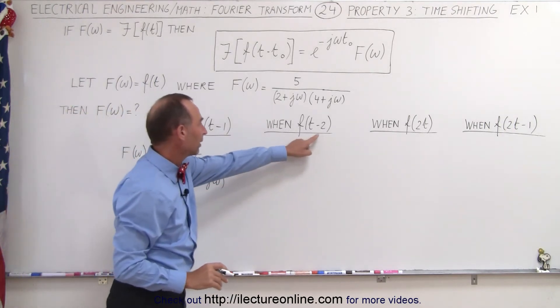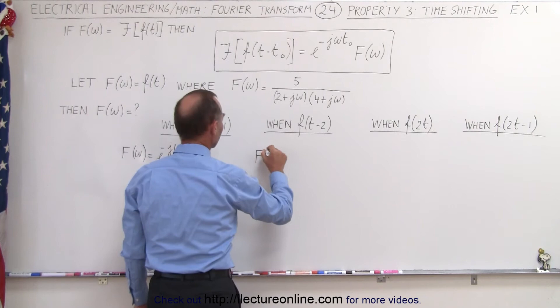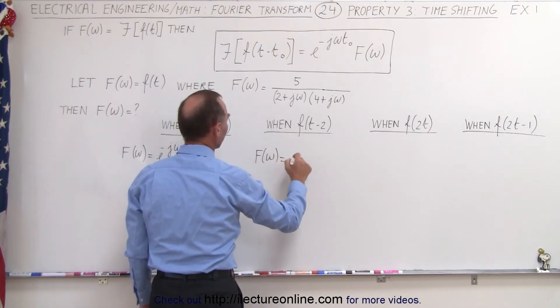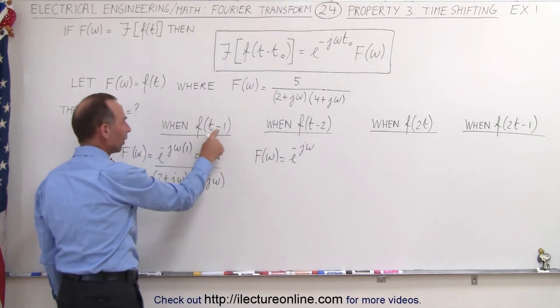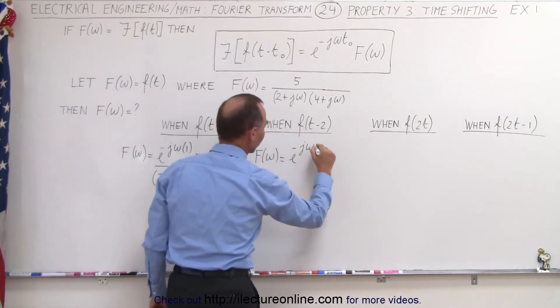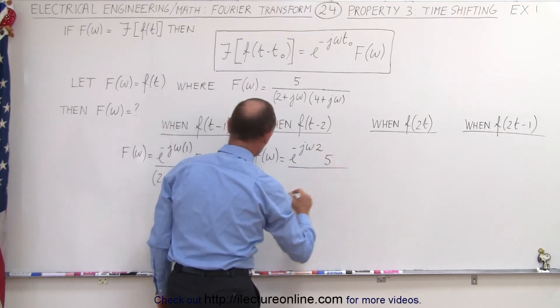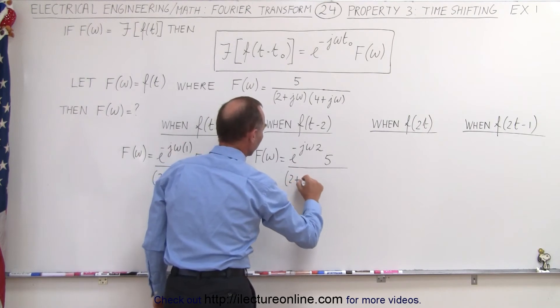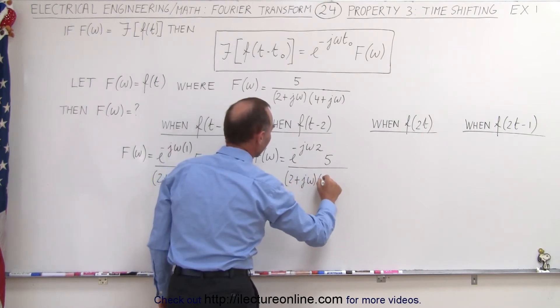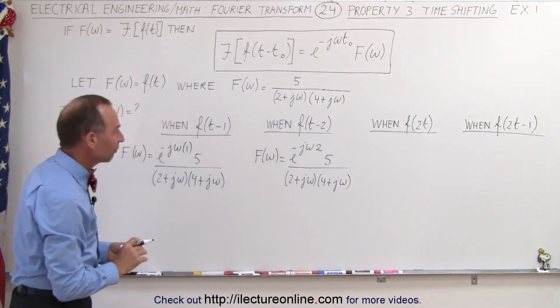And when we have a two there, when we shift the time by two, then the new Fourier transform will look as follows: we again have e to the minus j omega, but now instead of t being one, a shift of one, it'll now be a shift of two, so put a two there. We still have the five in the numerator divided by, the same as before, two plus j omega and four plus j omega. So that's what we have when we have a time shift.